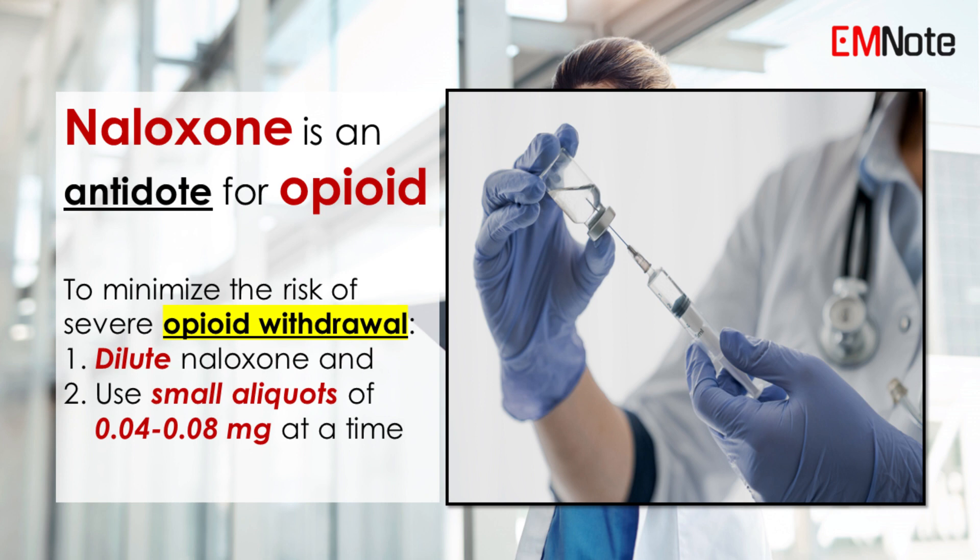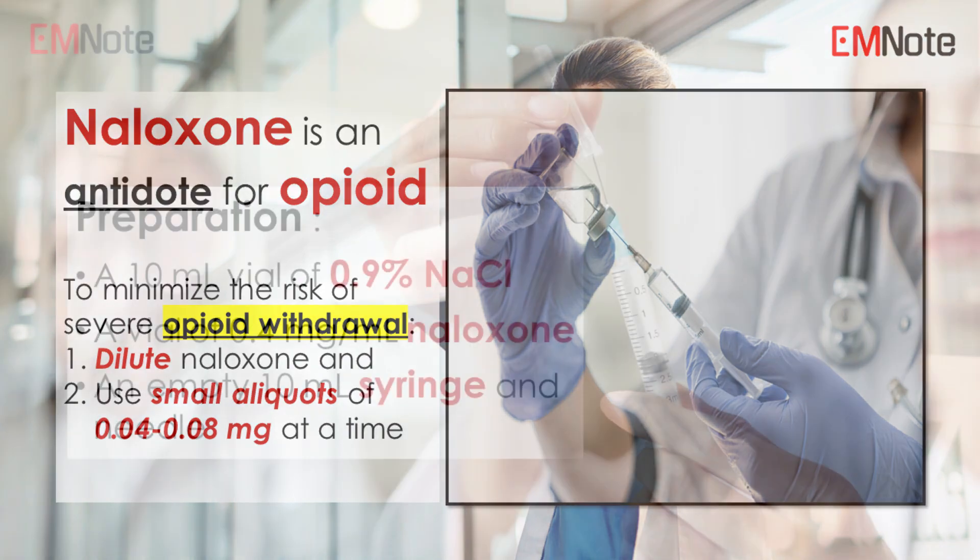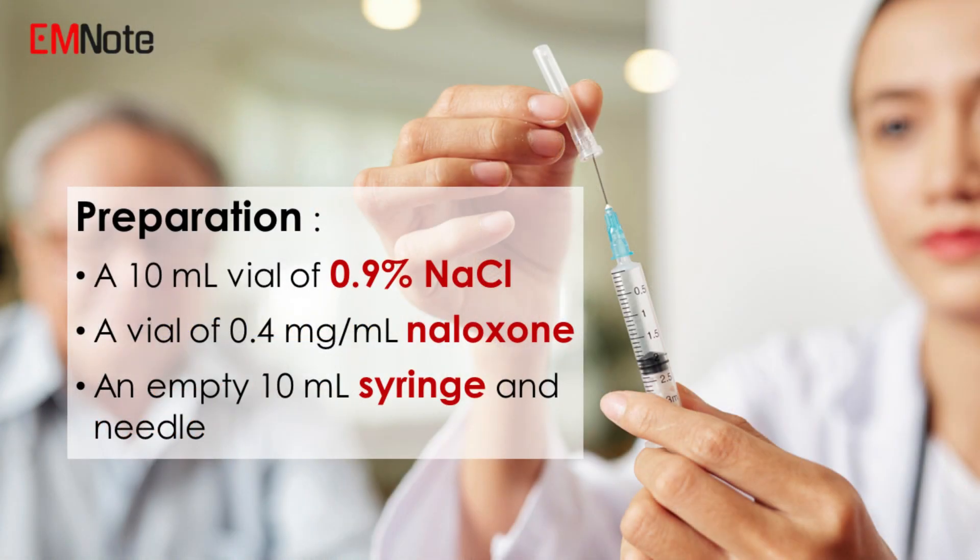To do this, consider diluting naloxone and administering small aliquots of 0.04 to 0.08 mg at a time. Here are the preparations you'll need for diluting naloxone.